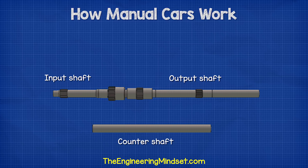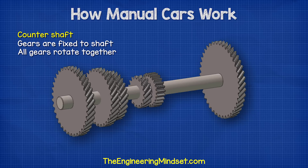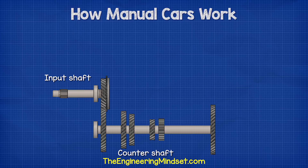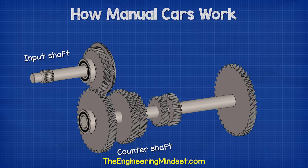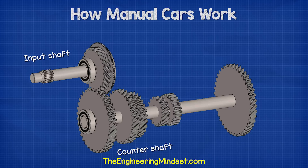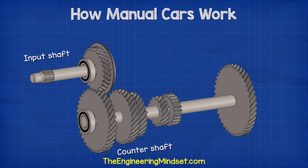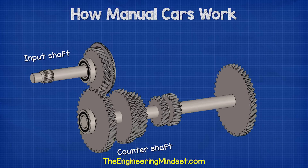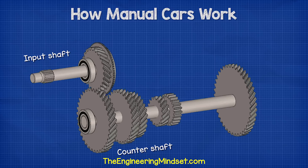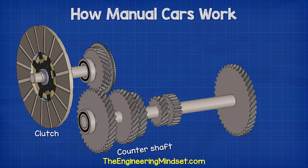A number of gears are fixed to the countershaft, and these will therefore all rotate together. On the input shaft, we also have a gear which is in constant mesh with the countershaft. The gear teeth are at an angle, which is known as a helical cut. These gear teeth gradually engage on multiple teeth from one side to the other, distributing the stress on the gears and making the gear mesh much quieter than the straight-cut spur gear. At the other end of the input shaft is the clutch, which will connect to the engine and force the input shaft to rotate.